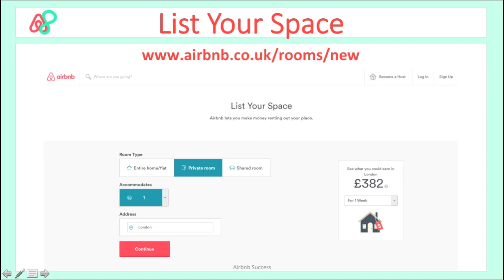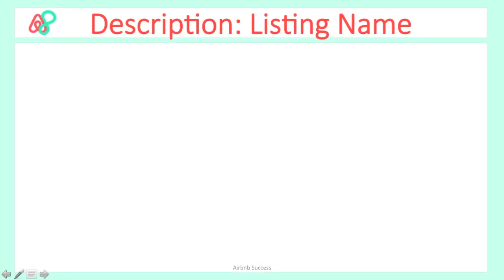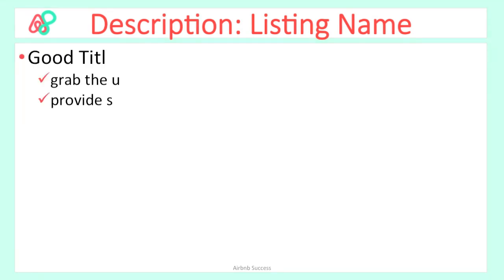When you list your space there are a few things to consider. The first is the description. The listing name — the title — is the most important thing when people look at your space. Actually there are two most important things: the title and the photo. These determine whether a person clicks into your listing or not.